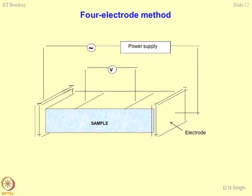This is a laboratory method. You can measure the voltage in the sample across two points when an electric field is applied. By measuring this voltage, you can work out the resistivity. This is known as the four-electrode method because you have two outer electrodes and another two inside the material.